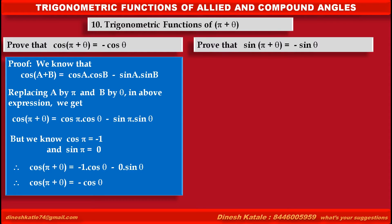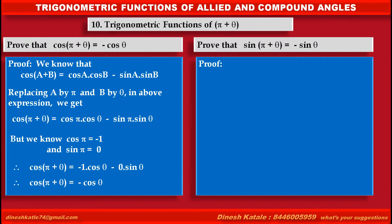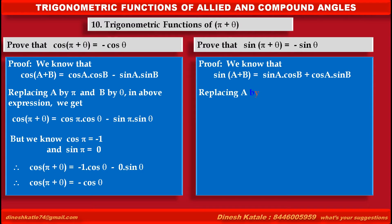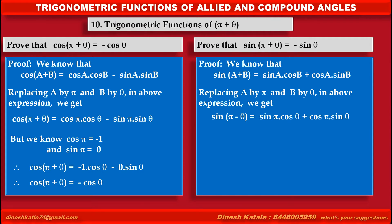Now, we have to prove that sin(π + θ) is equal to minus sin θ. See proof. We know that sin(a + b) is equal to sin a into cos b plus cos a into sin b. Replacing a by π and b by θ in the above expression, we get sin(π + θ) is equal to sin π into cos θ plus cos π into sin θ.